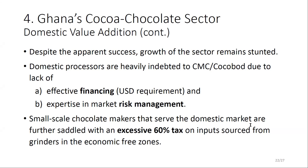Despite this apparent success, growth in this area has been a challenge. There is a high level of indebtedness by some of these companies to CMC, largely because they are competing with highly financialized grinders. They also lack expertise to manage their risk — although as a processor you can hedge beans against the futures markets, the processed product has no market for you to hedge against price risk. This is a challenge compared to multinational companies, which are highly financialized and have the expertise for risk management.